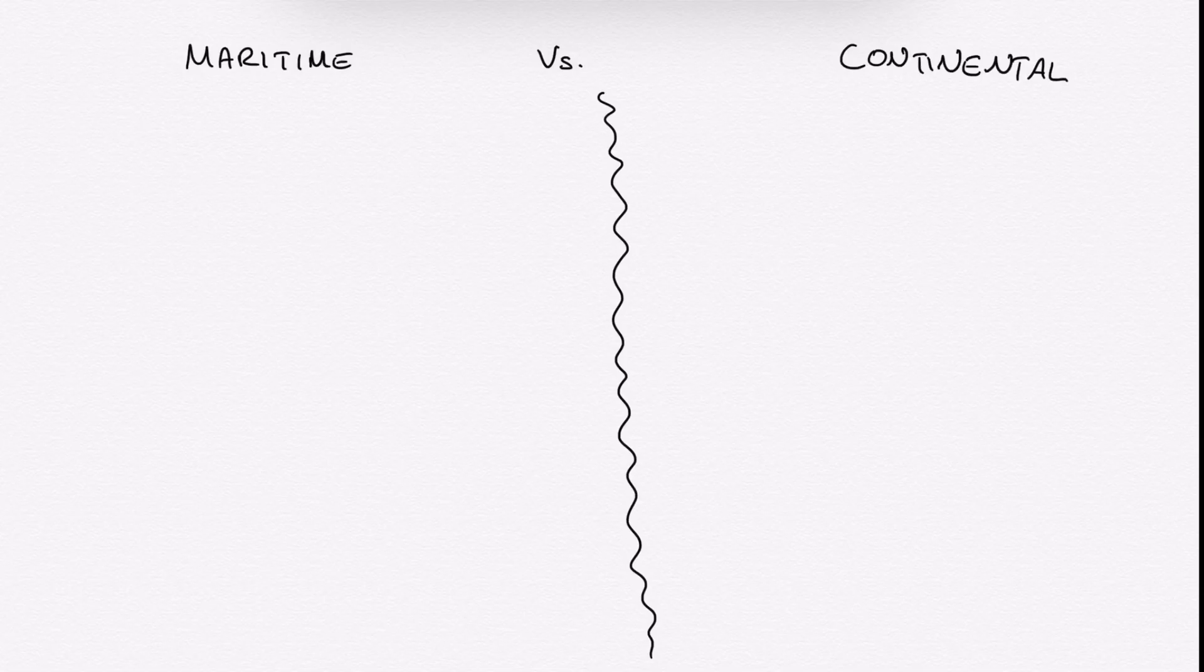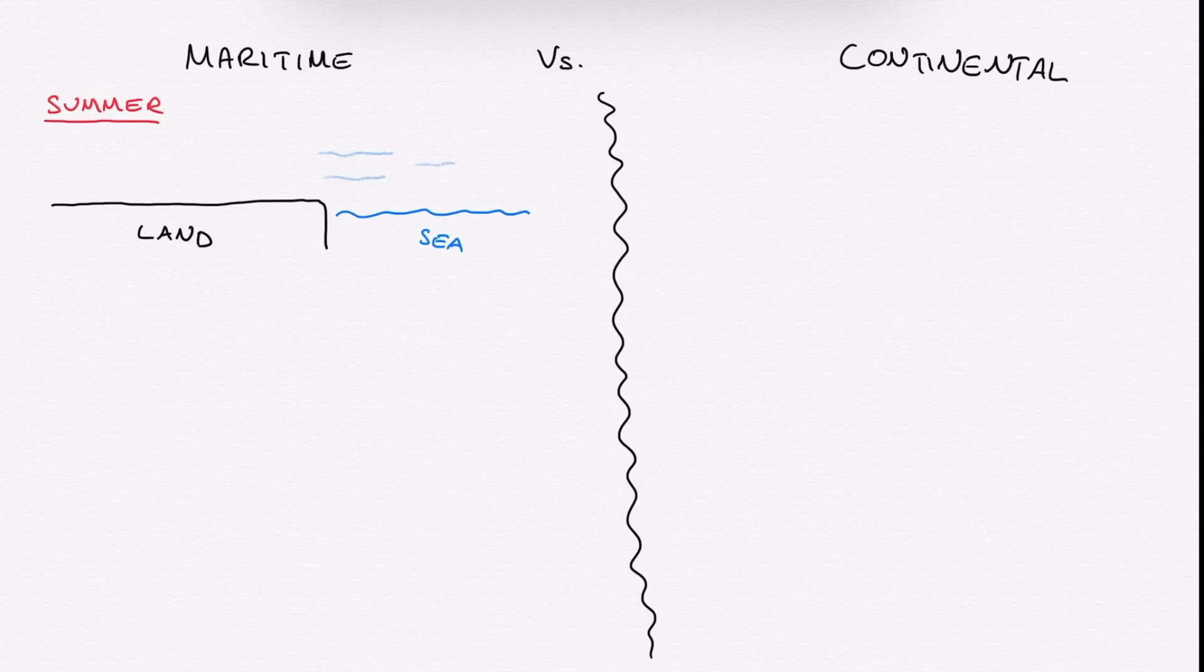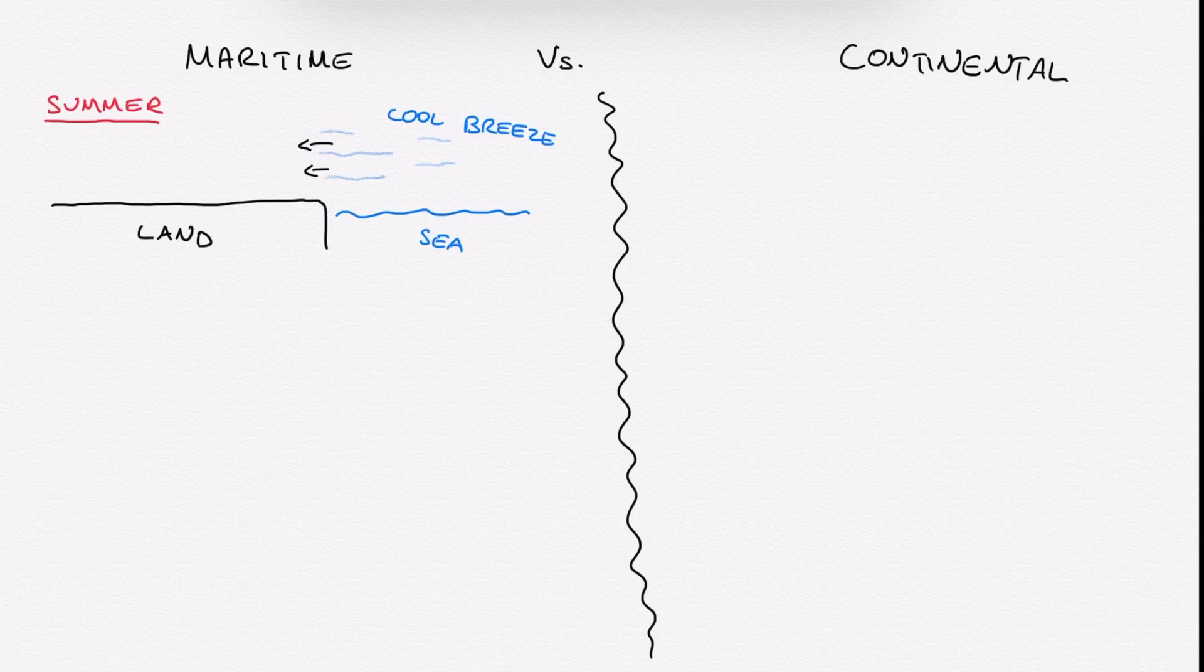Next, we have maritime and continental landmasses, and this has a big impact on temperature. We'll start with maritime. So maritime basically means near the sea. So if we're near the sea in the summer, we tend to find that the sea breeze is quite cool and it lowers the land temperature. This is why lots of people like living near coastal areas, because it makes the temperature in the summer nice and cool.